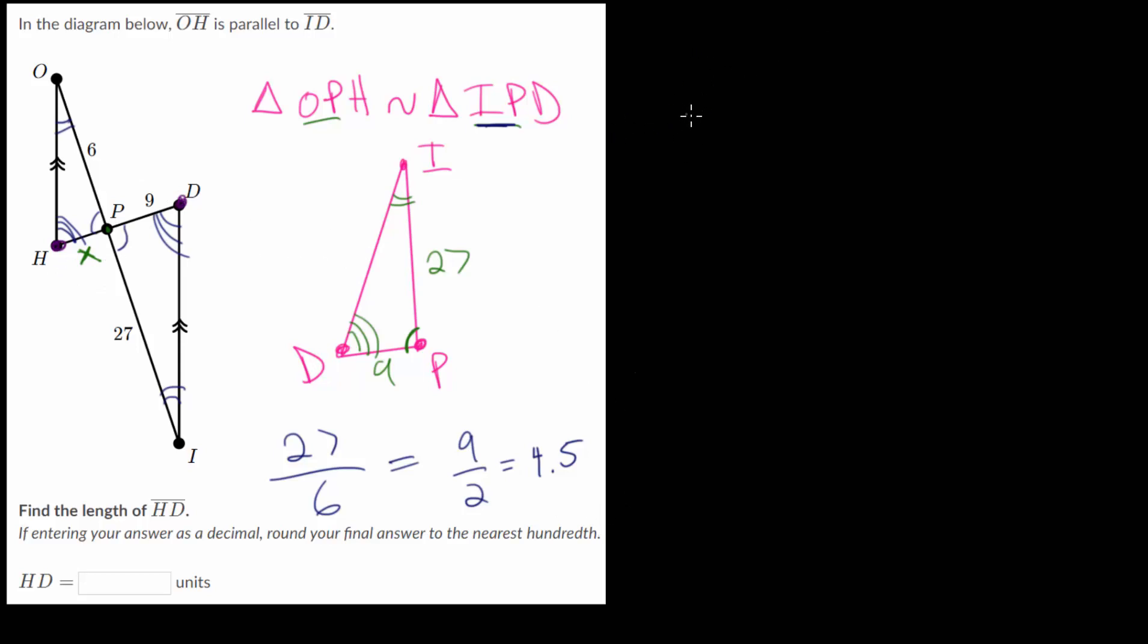We can say that the ratio of IP compared to OP, which is this ratio here, this is equal to the ratio of the small sides in each of these triangles, which is PD compared to HP.